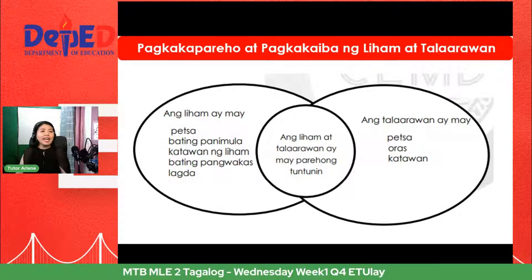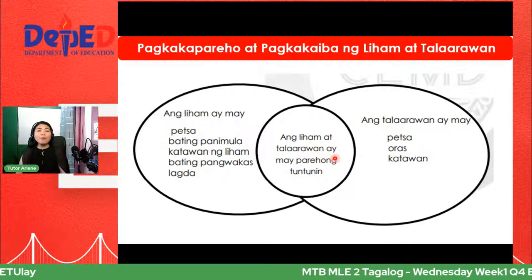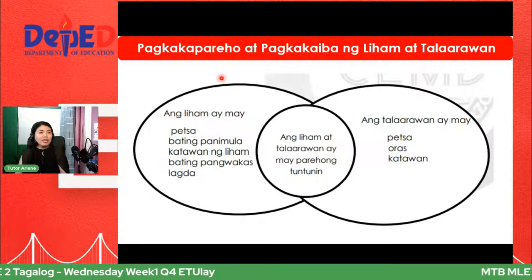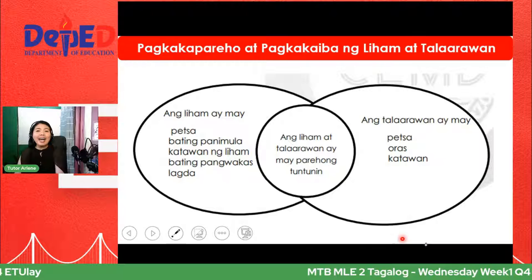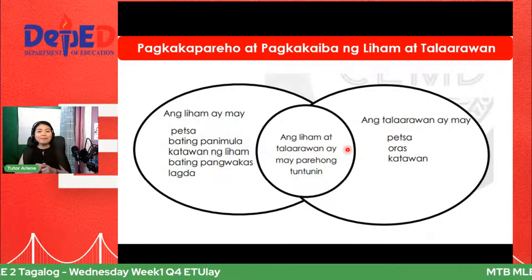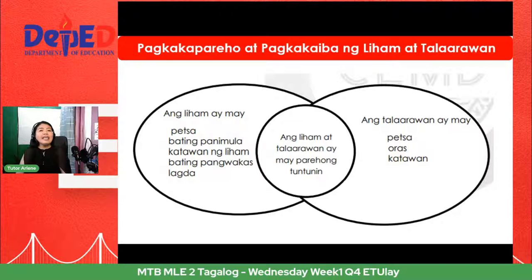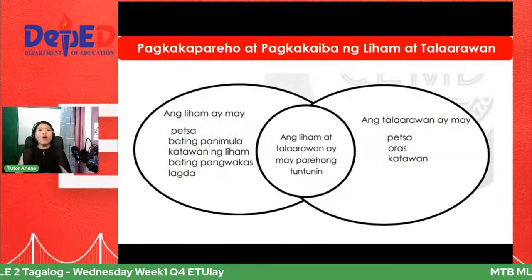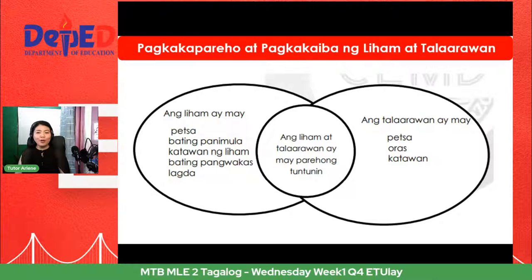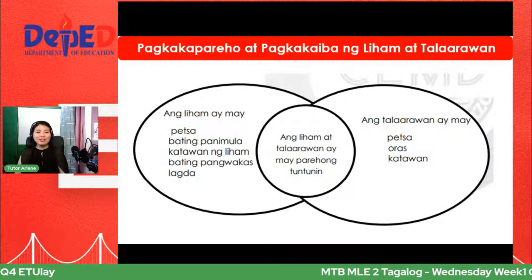Alam ninyo ba, mga bata, kung anong tawag natin dito sa dalawang bilog na nagtagpo sa gitna? Ang tawag natin dyan ay Venn Diagram. Sa pamamagitan ng Venn Diagram, maaari nating isulat yung pagkakatulad at pagkakaiba — dito at dito yung pagkakaiba, yung nasa gitna naman ay pagkakatulad. Mag-hard react nga ang lahat ng nakaunawa ng ating aralin. Nai-share na ba ninyo ang ating live session sa inyong Facebook? Ugaliin nating i-share para hindi lamang kayo ang natututo — ang objective ng Itulay ay maiparating sa lahat ng mga mag-aaral ang ating libreng online tutorial class.